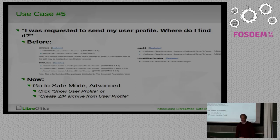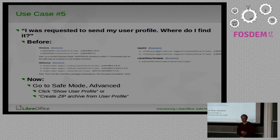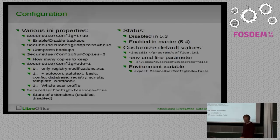Another use case: I was requested to send my user profile to a bug tracker or support system. Where do I find it? Before, we had a wiki page with instructions — on Windows it's in AppData/LibreOffice4/User, on Linux it's in the home directory .config/LibreOffice4/User, etc. Now you can find that folder by going to Safe Mode. There is an advanced section where you can click a button to show the user profile folder or directly create a zip file from it.